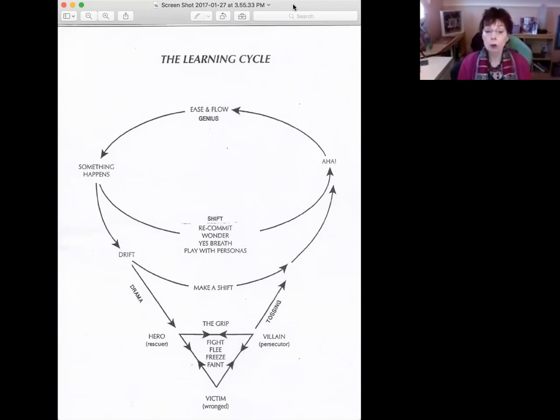So what you'll see is the triangle at the bottom, and when we get into the grip of the triangle, it's when we have a lot of drama in our life. So let's just talk about it from the top down. You're in ease and flow and genius, loving what you do, feeling great about who you are, and then something happens, like somebody asks you to do something that you really don't want to do, and you say yes, or you start to notice that you're beating yourself up.